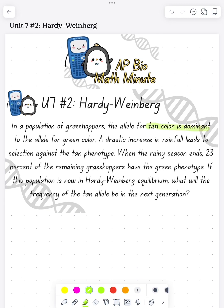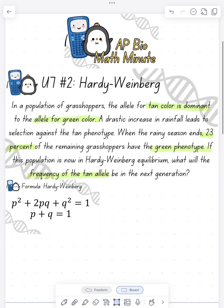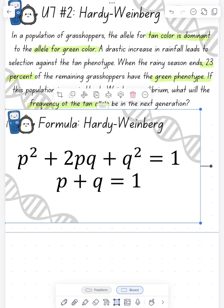In a population of grasshoppers where tan is dominant to green, there has been an increase in rainfall, so 23% are going to be green phenotype. And we want to see what's the frequency of the tan allele.